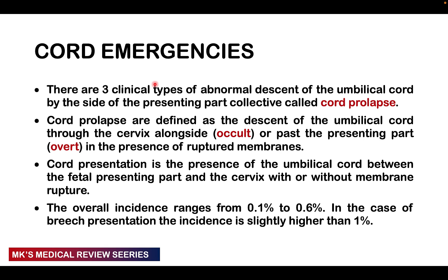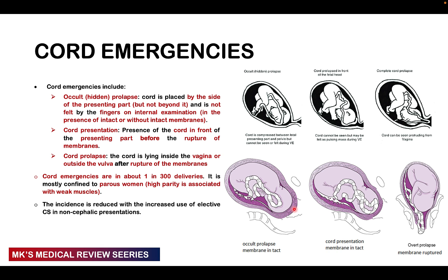Cord presentation is simply the presence of the umbilical cord between the fetal part and the cervix with or without rupture of the membranes. The overall incidence is about 0.1% to 0.6%, and in the case of breech presentation it is actually much higher at about 1%. The occult, remember, means hidden — the prolapse where the cord is placed right by the side of the presenting part but not beyond it, not in front of the presenting part, and you cannot feel it on internal vaginal examination.